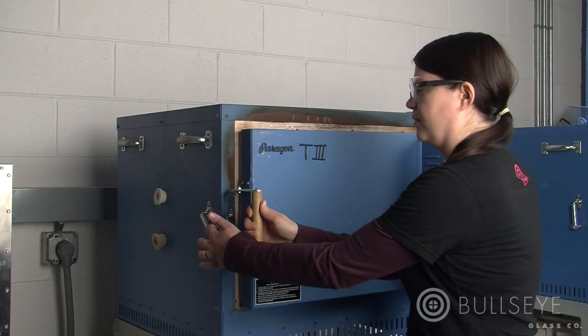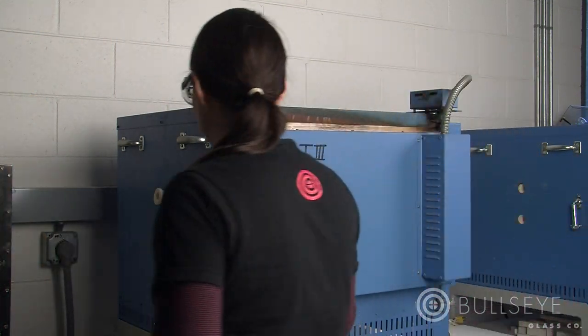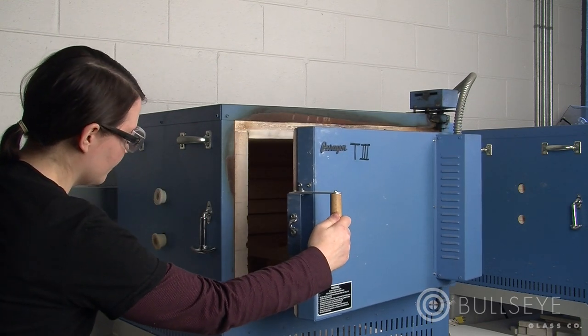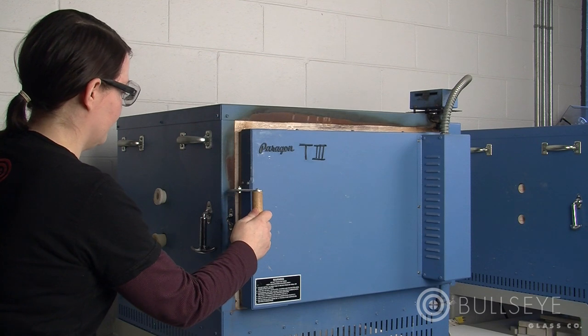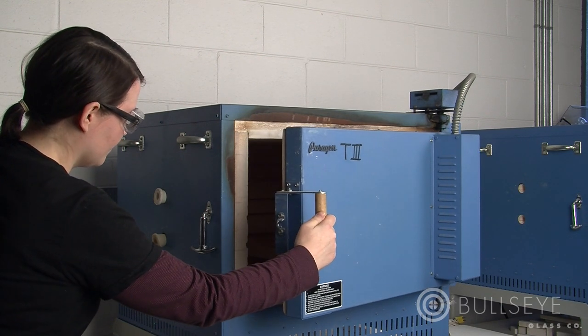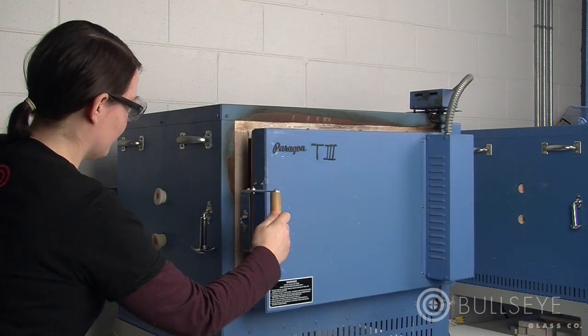Wearing eye protection and natural fiber clothing, you may open the door of a front-loading kiln at temperatures above 1100 degrees Fahrenheit. Depending largely on the form of the mold, slumping activity will take place closer to process temperature.